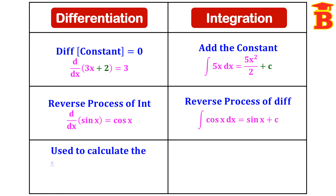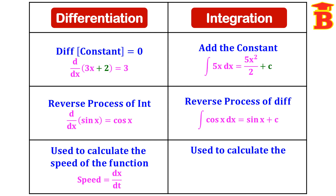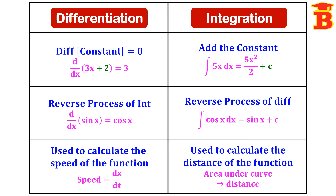Differentiation is used to calculate the speed of a function. Since integration finds the area under the curve, we can use it to find distance. Since these two are reverse processes, if we have the speed function and integrate it, we can get the distance. These are the differences between differentiation and integration.